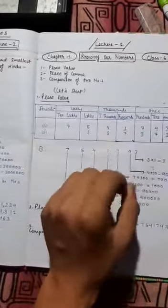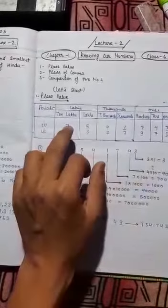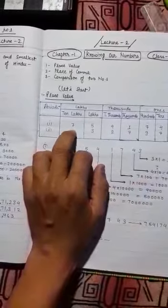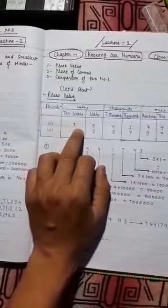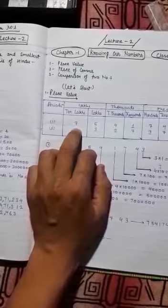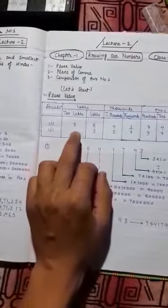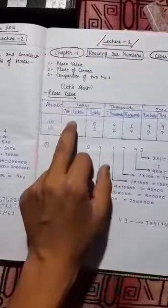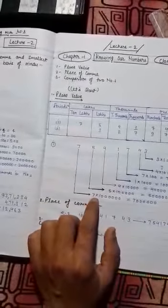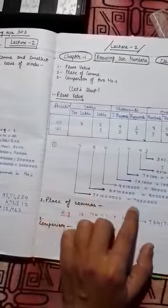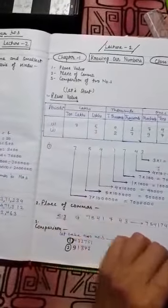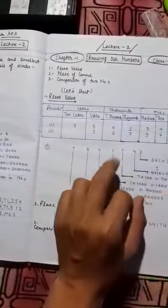Now the place value is equal to the digit. This is 7 in the tens place, so 7's place value is 7 into 10, that is equal to 70. So randomly you can take any number and find its place value.